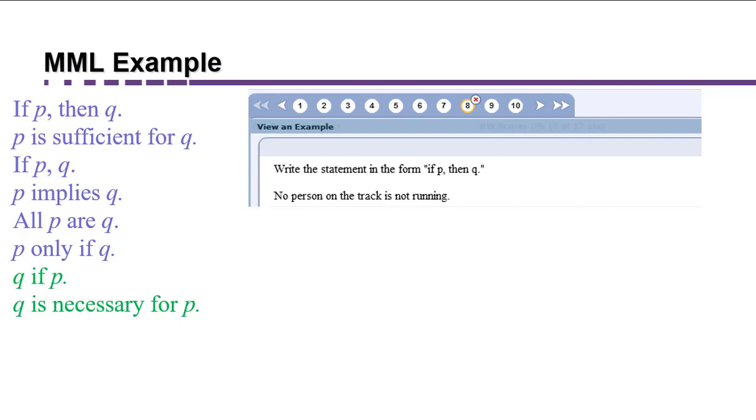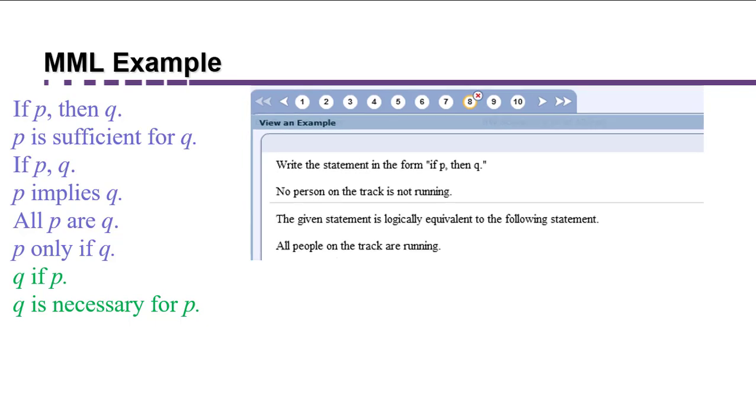But notice that no person on the track is not running. This involves a universal quantifier. It's talking about nobody, none. It's something that's universally true about everyone on the track.